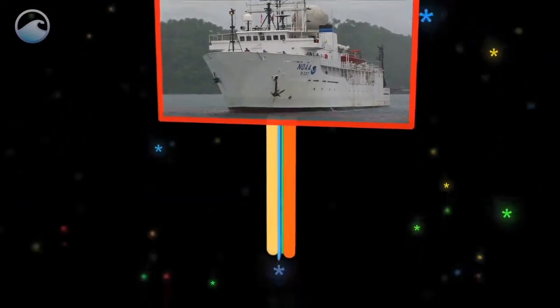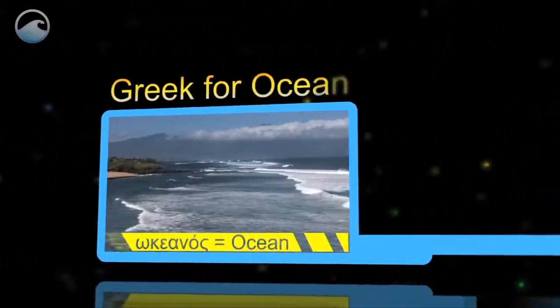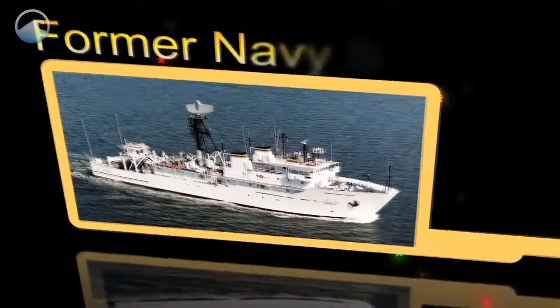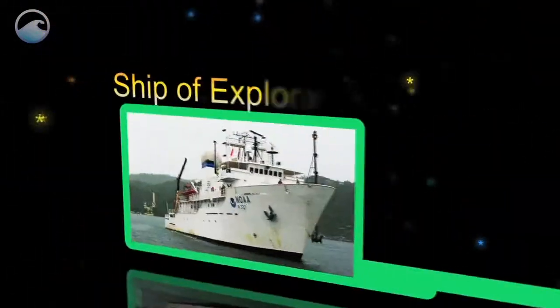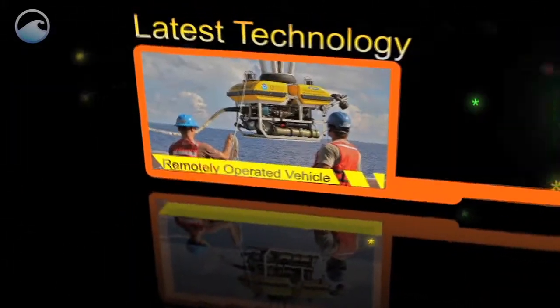This is the Okeanos Explorer. Its name comes from the Greek word for ocean. Once a surveillance ship for the Navy, it's now a ship of exploration, using the latest technology to bring us some of the most extraordinary sights from the deep sea.